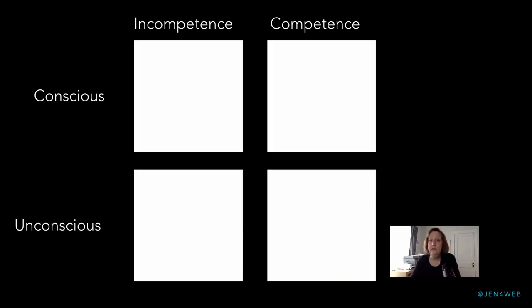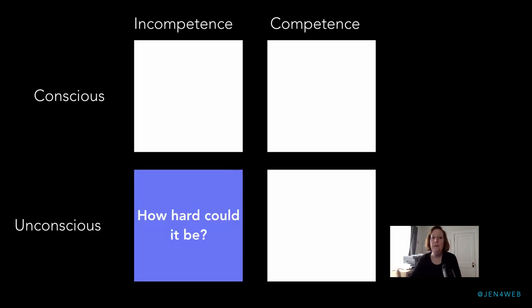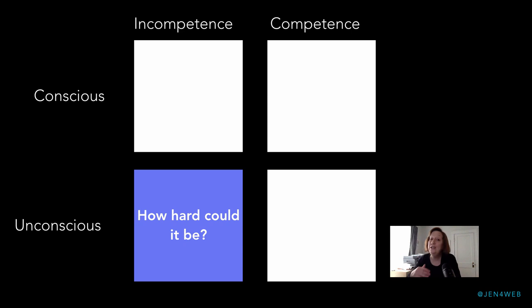A way to think about this is the concept of the four stages of competence — a two-by-two square. On one axis we have incompetence and competence; on the other axis, conscious and unconscious. Starting with unconscious incompetence: the phrase that describes this quadrant is 'how hard could it be?' Pretty much anything you've ever tried for the first time, you just think to yourself, how hard could it be? Sometimes it's not very hard, but other times you realize pretty quickly that you don't know a lot of stuff. This is the quadrant where you don't know what you don't know.